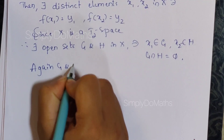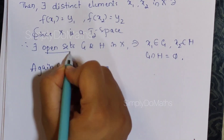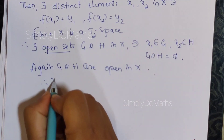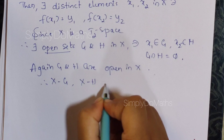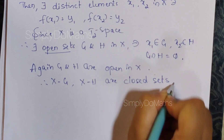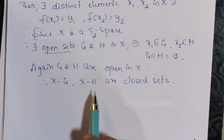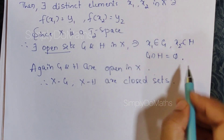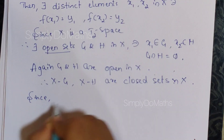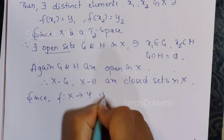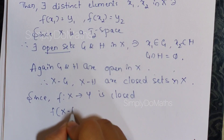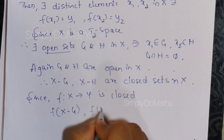G and H are open sets in capital X. Therefore X minus G and X minus H will be closed sets. We are considering this because in the hypothesis they have given that f is a closed function. So these are closed sets in capital X itself. Since f from X to Y is closed, we apply f to these closed sets.